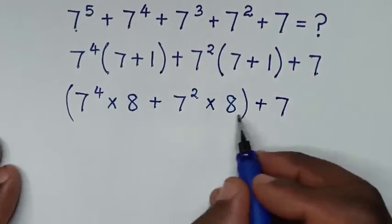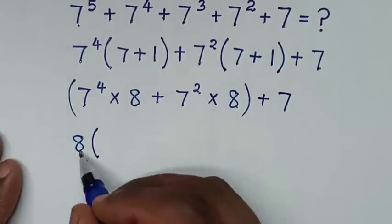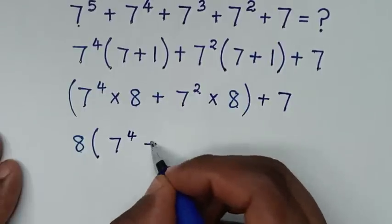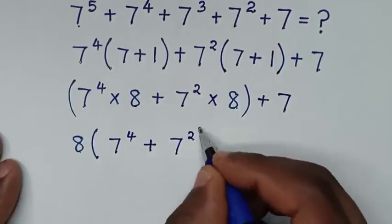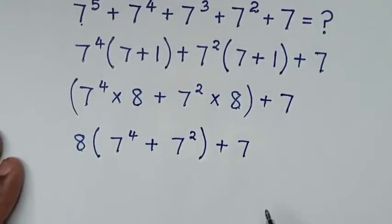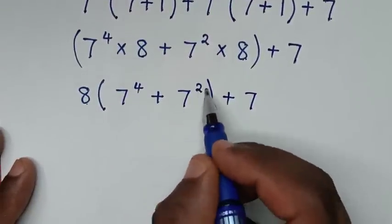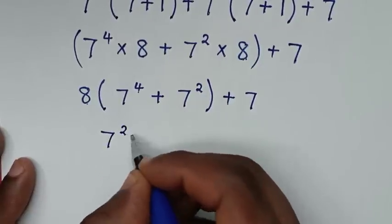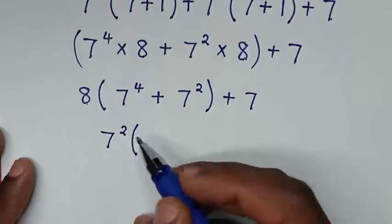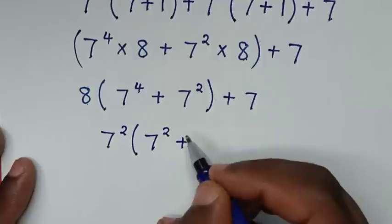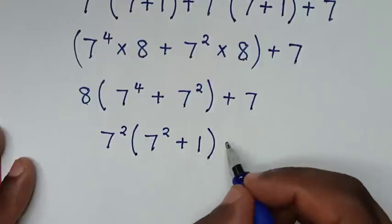Now, inside the bracket we have 7 power 4 times 8 plus 7 power 2 times 8, plus 7. In the next step, from inside the bracket 7 power 4 plus 7 power 2 — this 7 power 2 is common — so we will take 7 power 2 out of bracket. Then 7 power 4 divided by 7 power 2, that is 4 minus 2 equals 2, so it will be 7 power 2, then plus 7 power 2 divided by 7 power 2 is 1, then times 8, so I will multiply 8 in front.